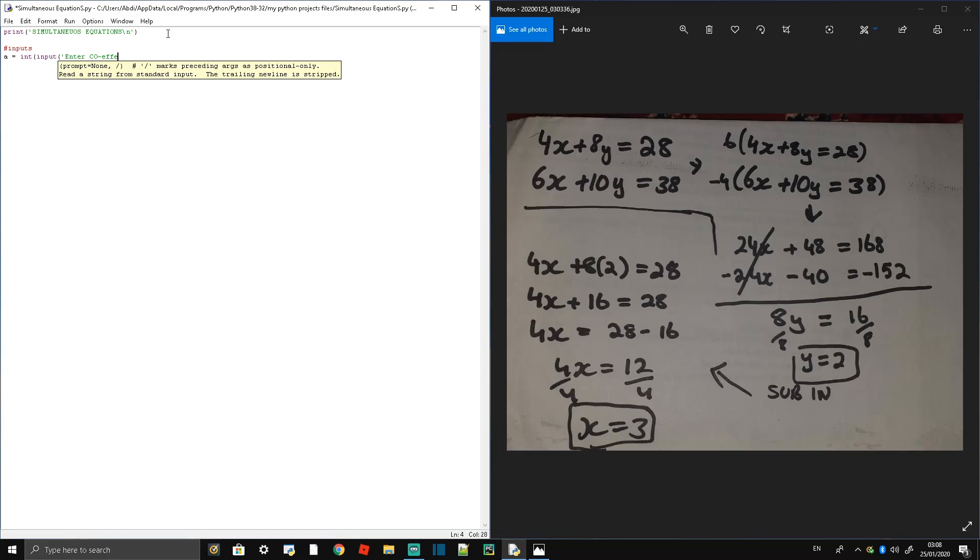When you put those in, the computer should be able to do all the work itself and then print it back at you and tell you and show you what happened, and then give you at the end the answer: x equals 3 and y equals 2.